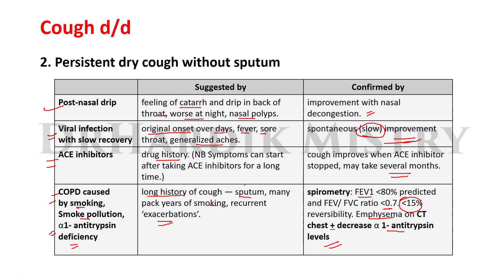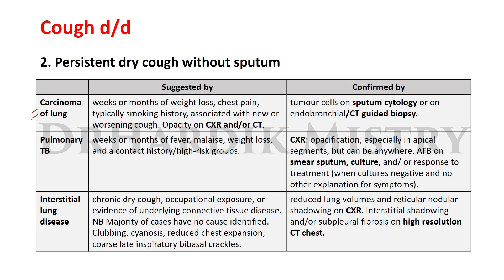Carcinoma of the lungs is suggested by weeks or months of weight loss, chest pain, typically a smoking history, and worsening cough, with presence of opacity on chest X-ray and/or CT scan. It is confirmed by finding tumor cells on sputum cytology or on endobronchial or CT-guided biopsy. Pulmonary tuberculosis is suggested by weeks or months of fever associated with malaise, weight loss, and contact history or belonging to a high-risk group.